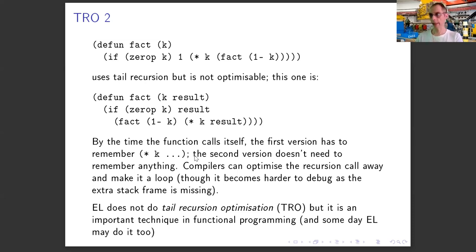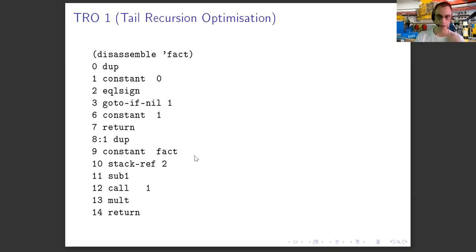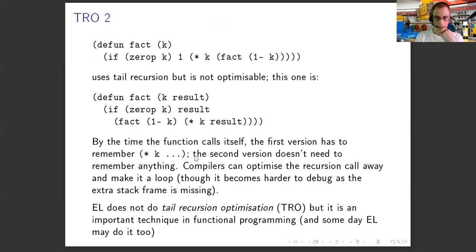So in that sense, we get the best of both worlds — except I should add that Emacs does not do tail recursion optimization, at least this version did not. But it might come in at some point. It's worth knowing about because every other functional language will do tail recursion optimization, so it's an important technique to know when you're a functional programmer.